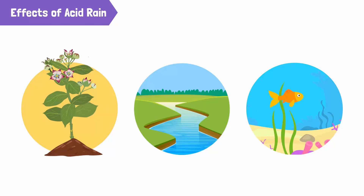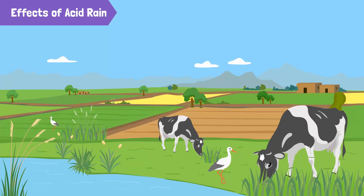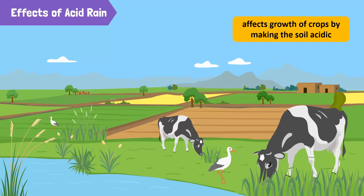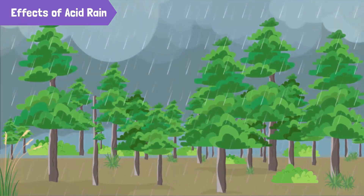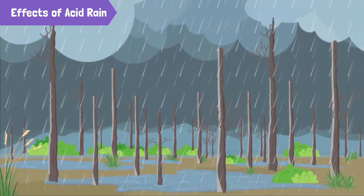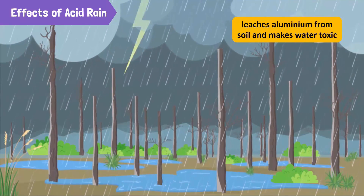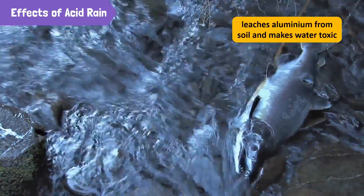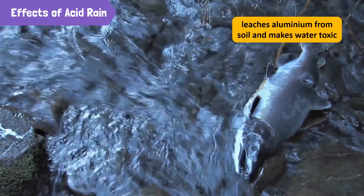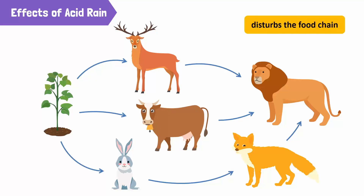The environmental effects of acid rain are very harsh on plants, lakes, streams, and aquatic life. In crop fields, acid rain makes the soil acidic, which affects the growth of crops. Acid rain also makes the water in streams and lakes acidic. When acid water flows through the soil, it washes aluminium from the soil into streams and lakes. This aluminium, in combination with the acid rain, makes water toxic for fish and other aquatic animals. Overall, this disturbs the food chain, since living things depend on one another for food.